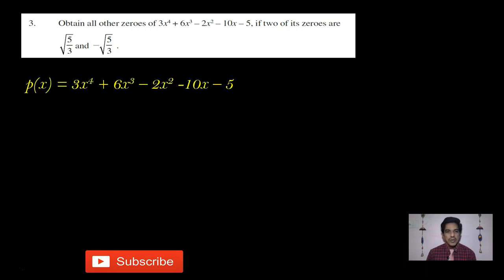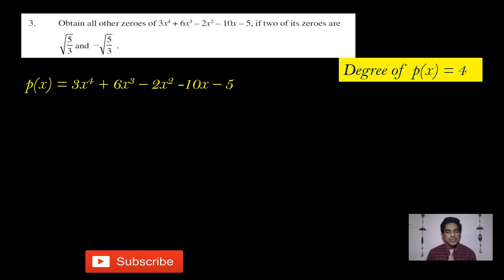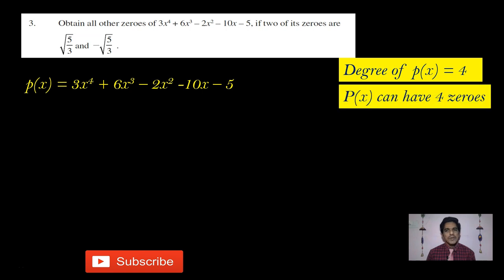Here we are given the polynomial 3x⁴ + 6x³ - 2x² - 10x - 5. The degree of this polynomial is 4. We know that the degree of a polynomial is equal to the number of zeros of the polynomial. So this polynomial can have at most four zeros. We are already given two zeros.